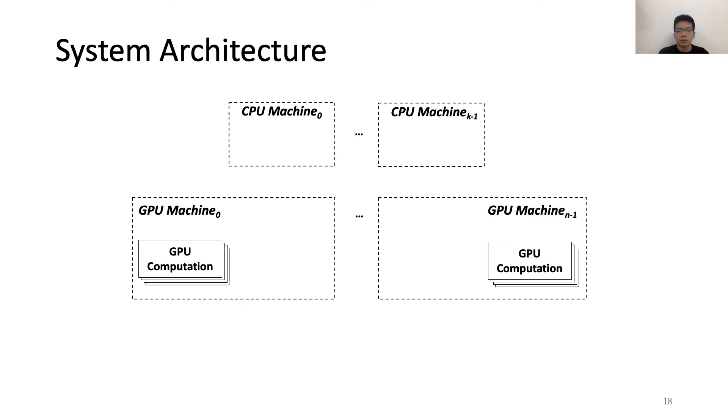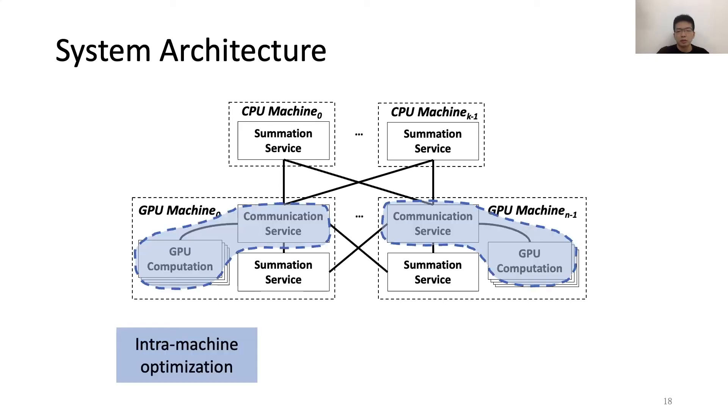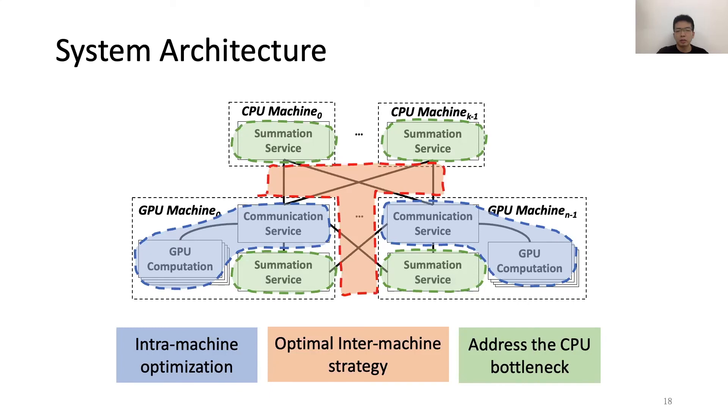Then let's put three pieces together and show the overall system architecture. We have many machines, and on each GPU machine, there is a module called Communication Service that can aggregate the gradients of the local GPUs. On each machine, there is also a module called Summation Service that runs on CPUs and can process the gradients from other GPU machines. And all these modules interact with others using the network communication. Among them, the Communication Service is responsible for intra-machine optimization when aggregating the local gradients. The Summation Service module can address the CPU bottleneck. And the network communication uses the optimal inter-machine strategy to maximize the performance.